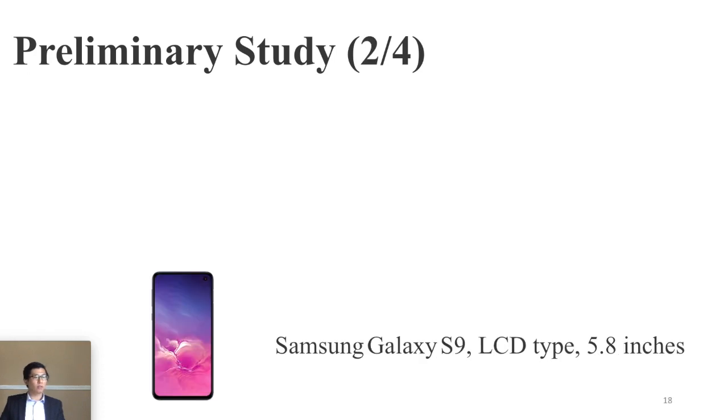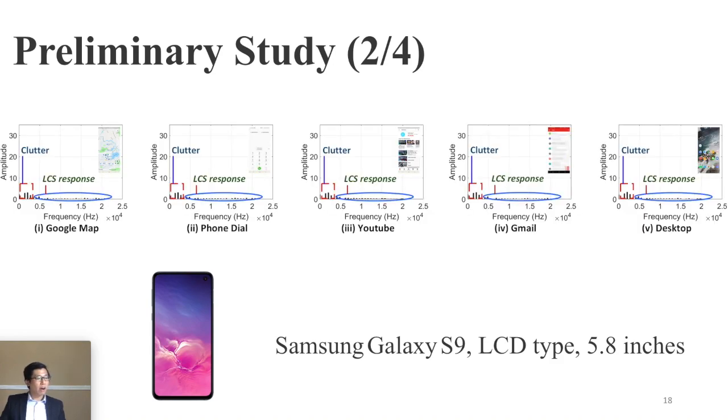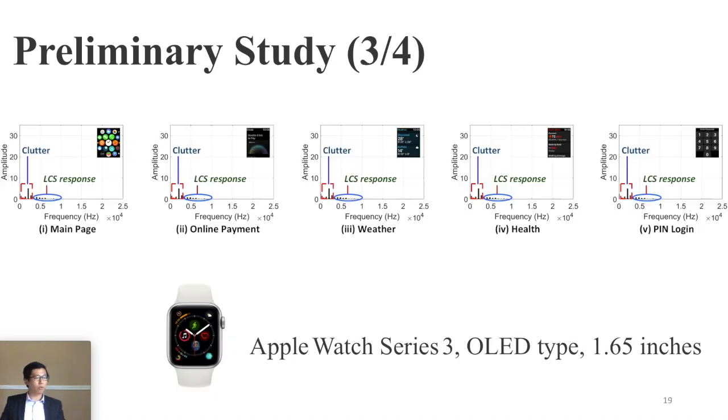And also we test on the Samsung smartphone, which is LCD type and only 5.8 inch with very common five activities, and the responses are quite different. Similar results can be obtained on the iPhone watch, which is OLED type and only 1.6 inch.